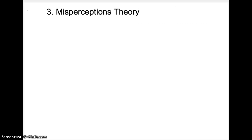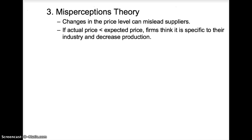The third theory is misperception theory. A change in the price level can mislead suppliers. If actual prices are less than expected prices, firms think the price change is specific to their industry and decrease production.